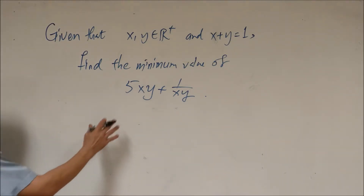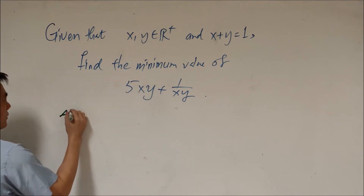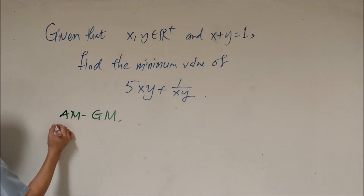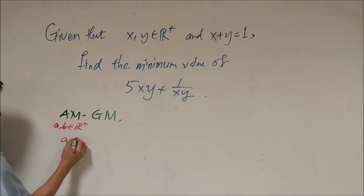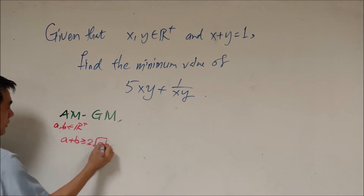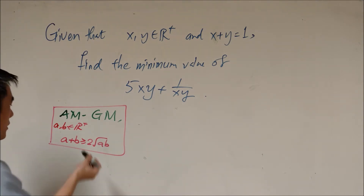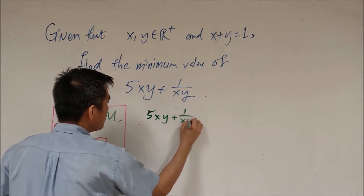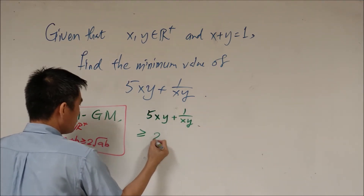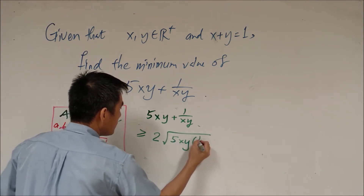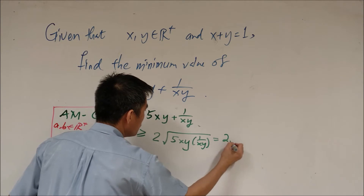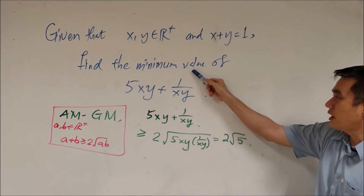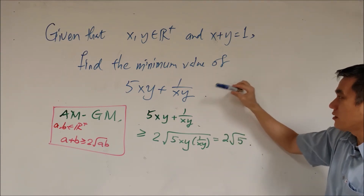One common approach is to use AM-GM. We know that for positive a and b, a plus b is greater than or equal to 2 times the square root of ab. Using AM-GM, we get that 5xy plus 1 over xy is greater than or equal to 2 times the square root of 5xy times 1 over xy, which simplifies to 2 root 5.